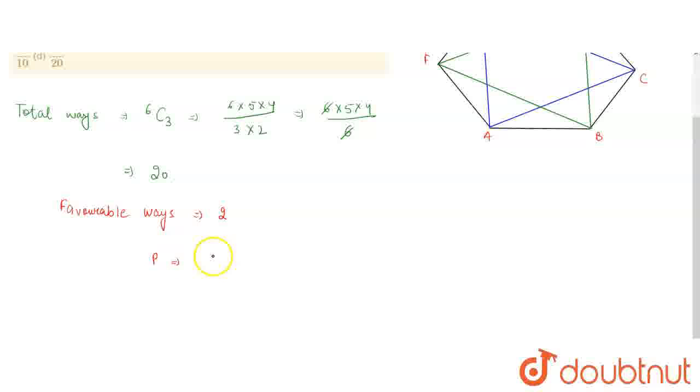The probability equals favorable outcomes divided by total outcomes. The favorable outcomes are 2 and the total number is 20. So the answer is 2/20, which equals 1/10.